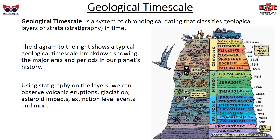Now, the geological timescale is a system of chronological dating that classifies geological layers, or strata, or stratigraphy, in time. You can see this diagram on the right — it shows a typical geological timescale showing the major areas and periods in our planet's history. You can see the Archean, Proterozoic, Paleozoic era, Mesozoic, and the Cenozoic, and in between those major eras you have extinction events. Using these layers, you can observe volcanic eruptions, glaciation, asteroid impacts, extinction events, and more, all illustrated using this timescale.